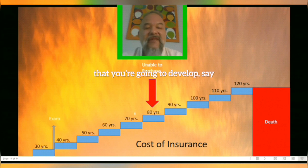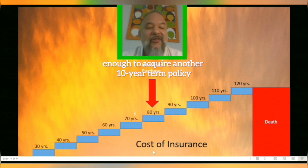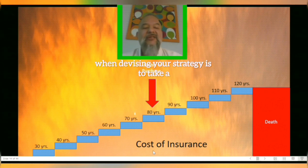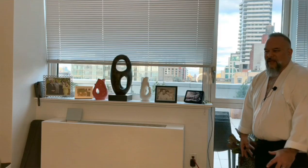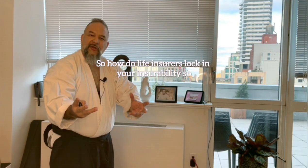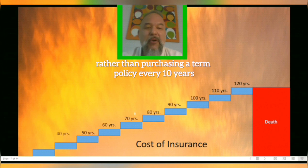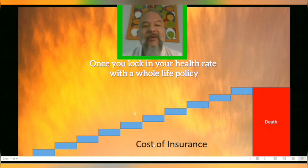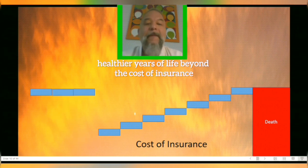As a term policy renter, once you get to a certain age, you can no longer acquire a new policy — this is known as the term trap. With every new term policy written, a complete physical workup and evaluation must be completed. What's the likelihood you'll develop type 2 insulin-dependent diabetes, cancer, a heart attack, or stroke? Assuming you'll be healthy enough to acquire another 10-year term policy is a risk in itself. A good place to start when devising your strategy is to look at your family's health history and ask when things typically break down for most family members.